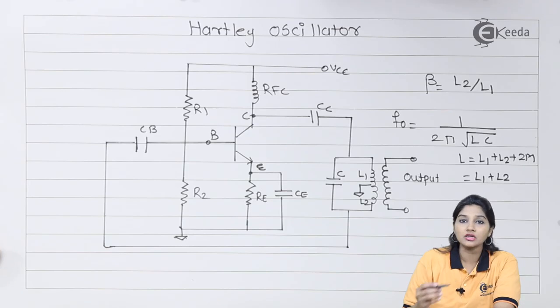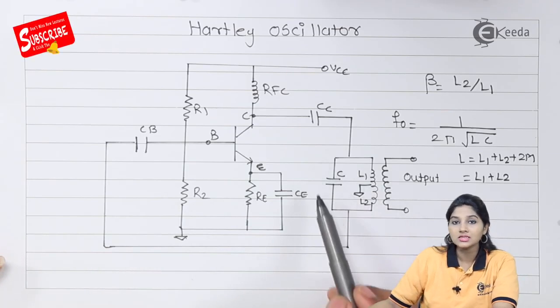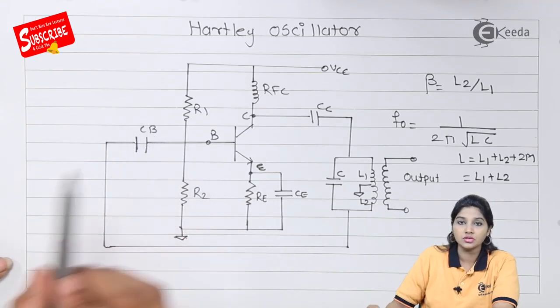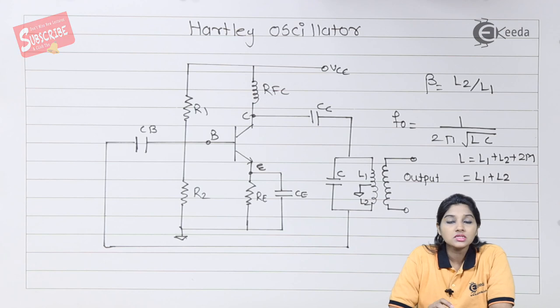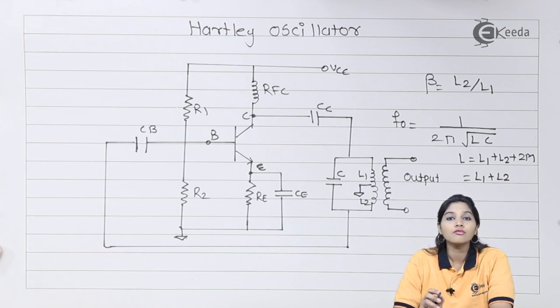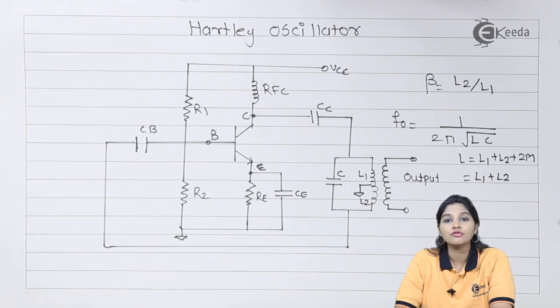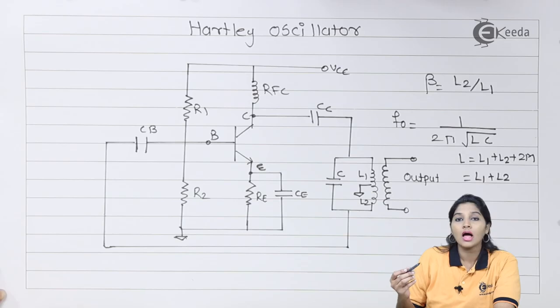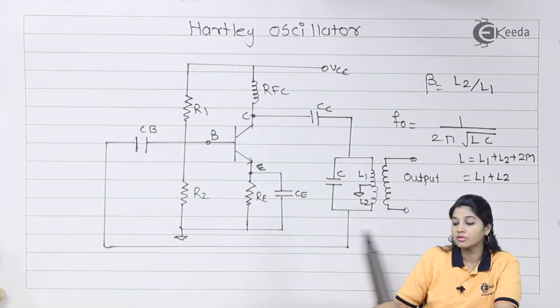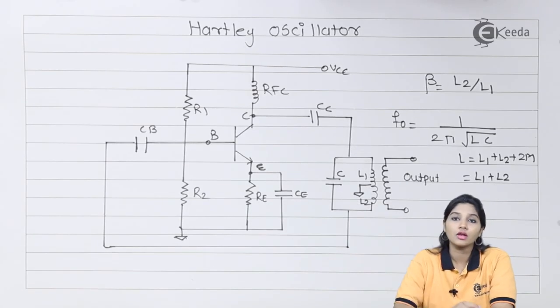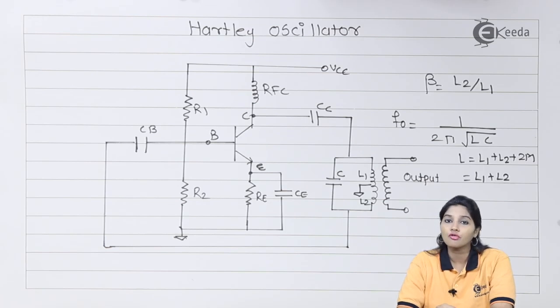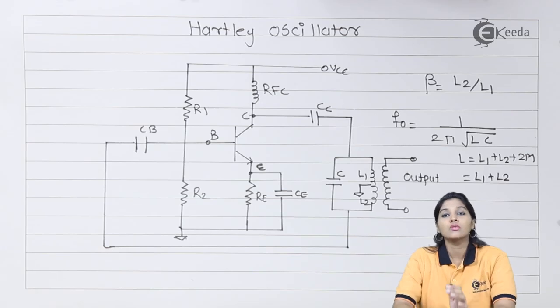The feedback is provided from LC tank circuit to the base of transistor through capacitor CB. This LC tank circuit provides a feedback network and provides a phase shift of 180 degrees, because the phase reversal between input and output is achieved as we are taking output and providing input from opposite ends of L1 and L2. Because of that, the feedback network provides phase shift of 180 degrees.